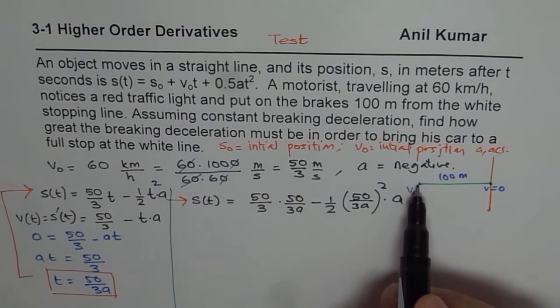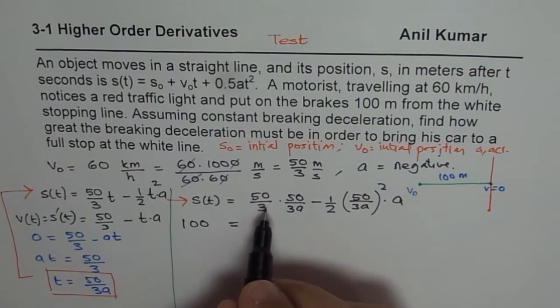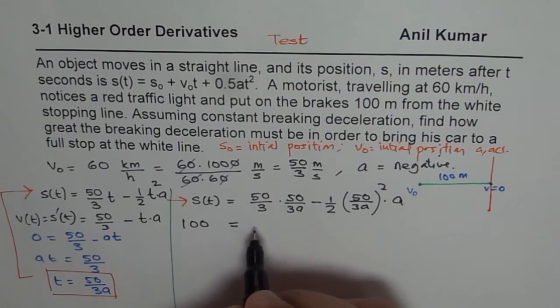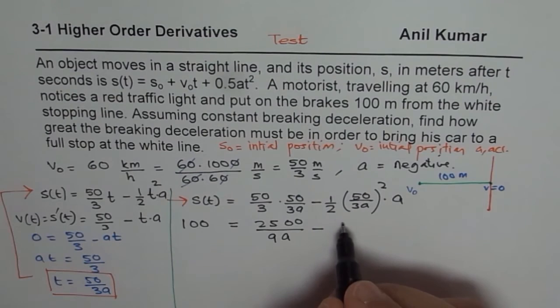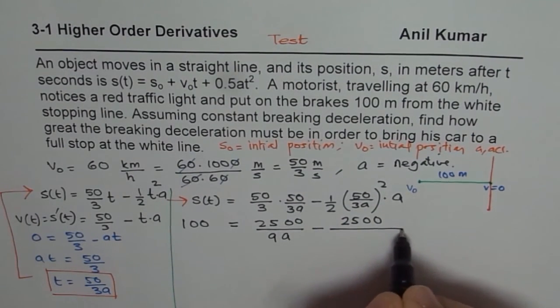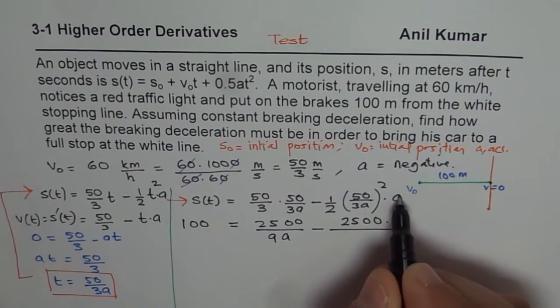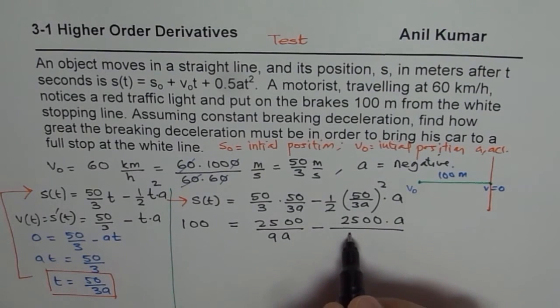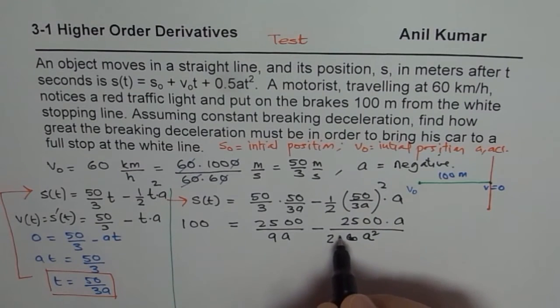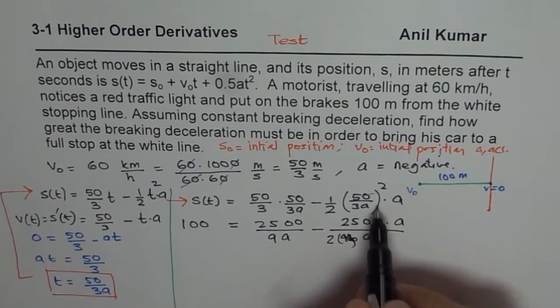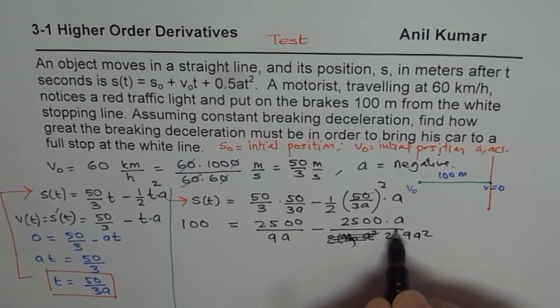And all this, we know this is 100. So start with, that is the total distance. So we can write this as 100 equals, now you can simplify this, 50 times 50 is 2,500 over 9a minus, now here also we have 2,500 which is 50 squared, so we will write 2,500 divided by, 3 times 2 is 6 and a squared. 2 times 9a squared. So 50 squared is 2,500 divided by 2 times 9a². So we have 2 times 9a².